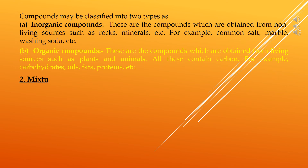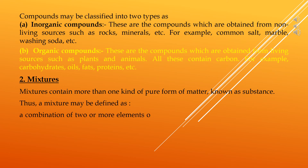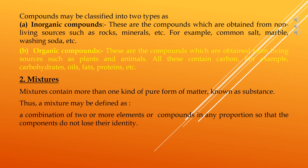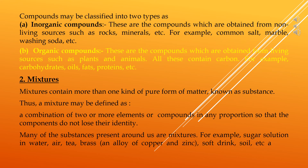Under the chemical classification of matter, the second type is mixtures. Mixtures contain more than one kind of pure form of matter, known as a substance. A mixture may be defined as a combination of two or more elements or compounds in any proportion, such that the components do not lose their identity. Examples include sugar solution in water, air, tea, brass (an alloy of copper and zinc), soft drinks, and soil.